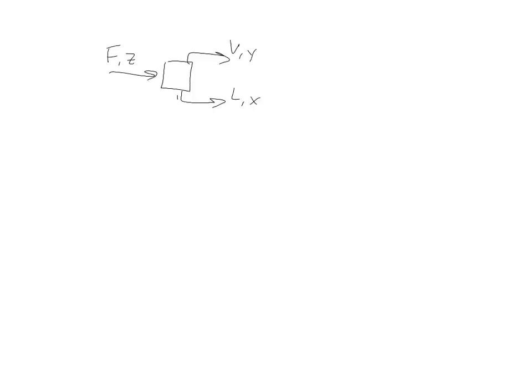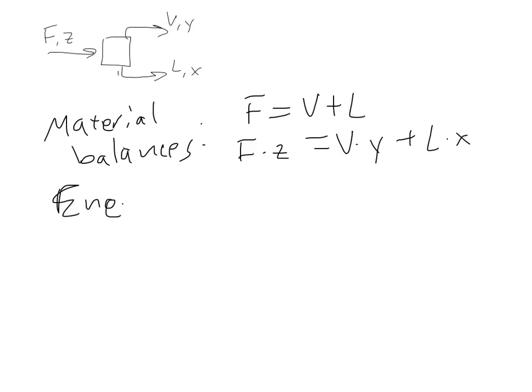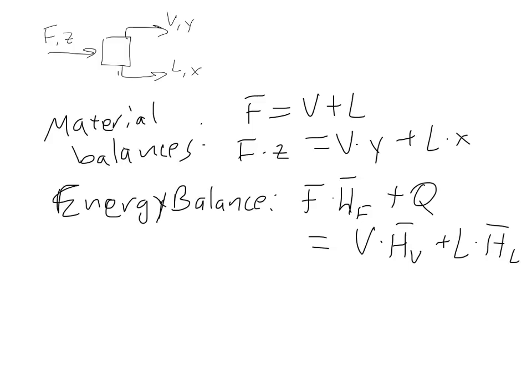We can write out some material balances. This should be second nature, hopefully, to you by now or almost getting to be second nature. We can also write out an energy balance. I can write this as what's going in equals what's going out: F times HF hat equals V times HV hat plus L times HL hat. That is our energy balance.